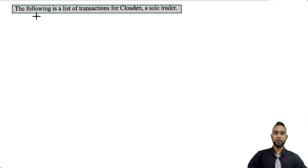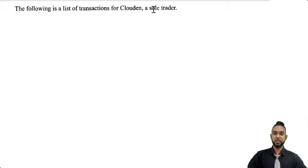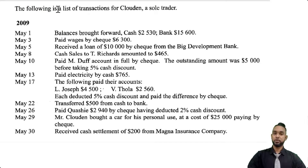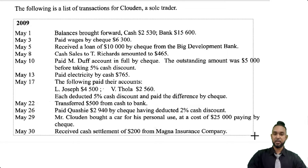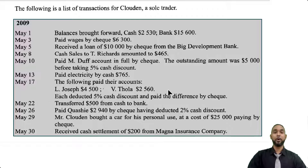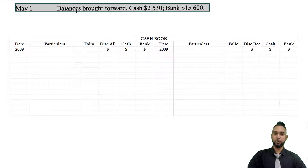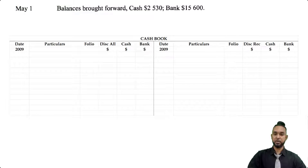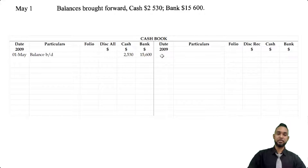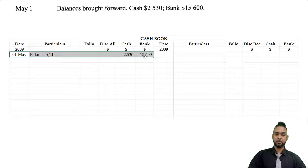They tell us that the following is a list of transactions for Cloudon, a sole trader. What they want us to do is to draw up a cash book. On May 1st, we have balances brought forward: cash $2,530 and bank $15,600. Now cash and bank are both assets, and assets have debit balances. So you're going to see both of those items on the debit side of the cash book.